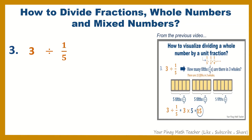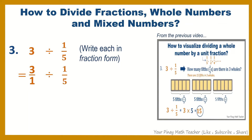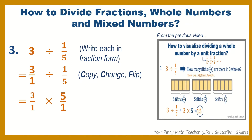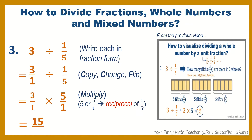Number 3: 3 divided by 1 fifth. Again, write each in fraction form: 3 is equal to 3 over 1, divided by 1 fifth. Then copy, change, flip — copy 3 over 1, times 5 over 1. 5 over 1 is the reciprocal of 1 fifth. After that, multiply to get 15 over 1, or simply 15.